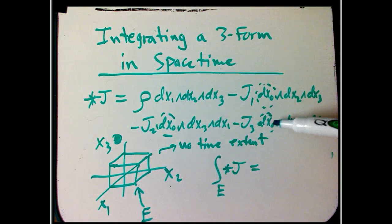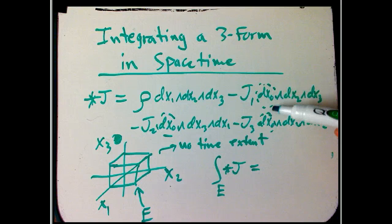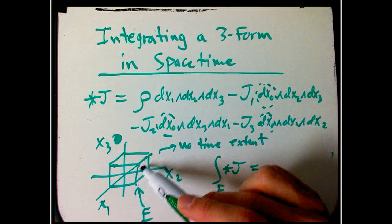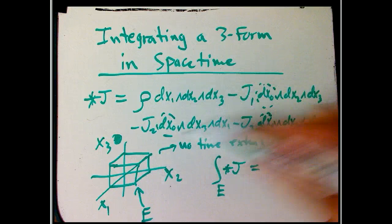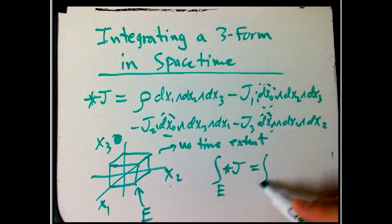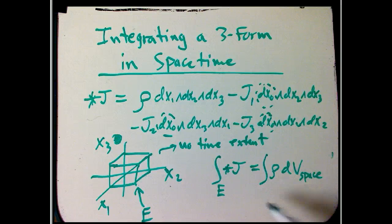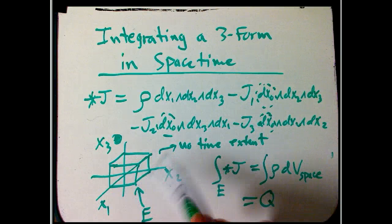So dx naught, that's measuring how far things go in the x naught direction. This doesn't go in the x naught direction. It has zero duration in time. And so all these three are going to die. And we're just going to get the ordinary integral over the three space dimensions of rho. And guess what? That's q. That's the charge enclosed. So it's an incredibly natural thing to integrate over this guy.